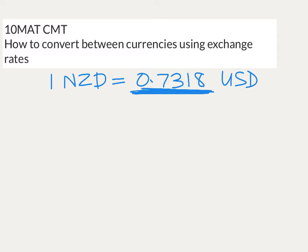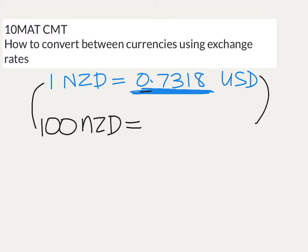We'll go with: 1 New Zealand dollar is 0.7318 US dollars. So what does that mean? If I took a New Zealand dollar into the bank and said I would like to convert this for a US dollar, they would laugh at you — it's only $1, go away. So let's try 100 New Zealand dollars. What would I get? The bank would say: 1 New Zealand dollar is worth 0.7318 US dollars, so 100 is worth 100 lots of that, which gives me 73 US dollars and 18 cents.